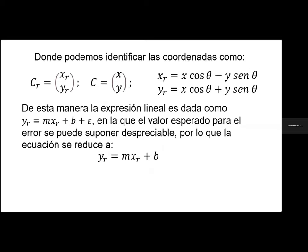Una vez que hemos realizado el cambio de variables a través del método matricial y con rotación, obtenemos estas nuevas ecuaciones que están definidas en función del ángulo en el que se da la inclinación en diagonal de la información. Por otro lado, consideramos que para el caso de una variable nueva, al buscar el valor esperado con respecto a la ecuación ideal, uno espera que los errores sean minimizados y la expresión final sea de esta forma en la que ya no aparece el término del error.